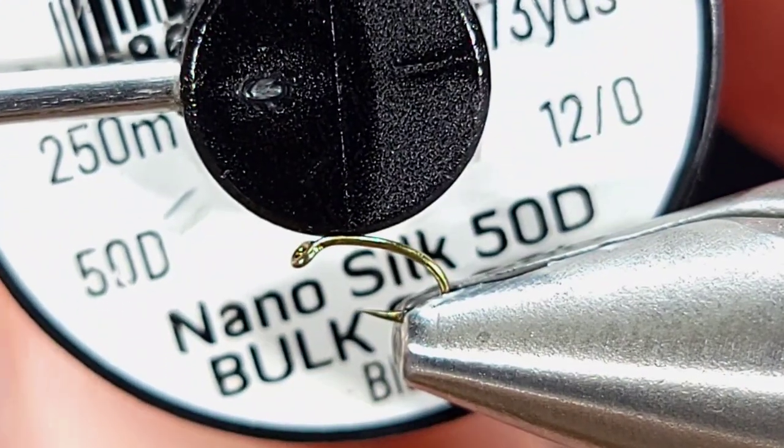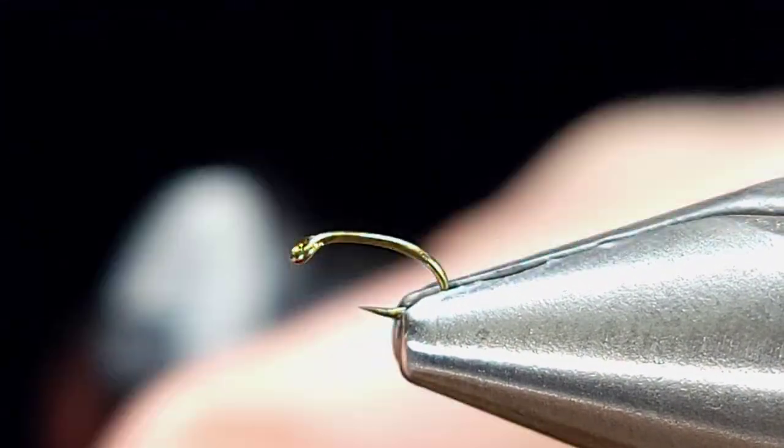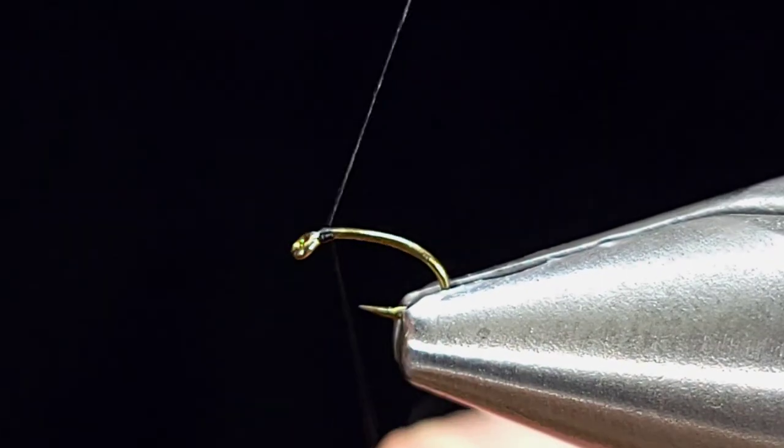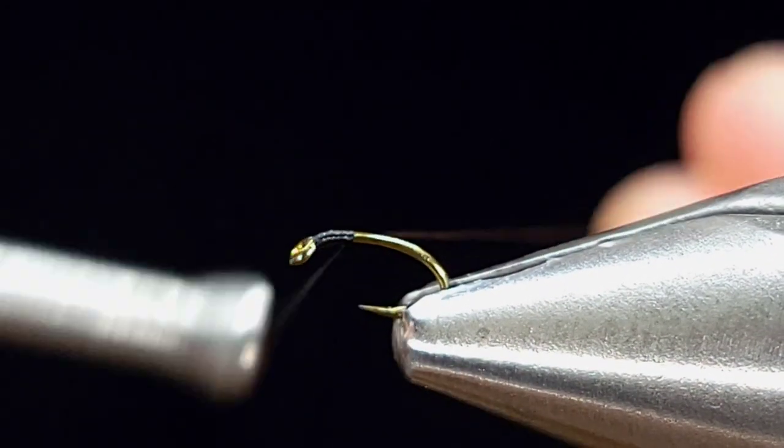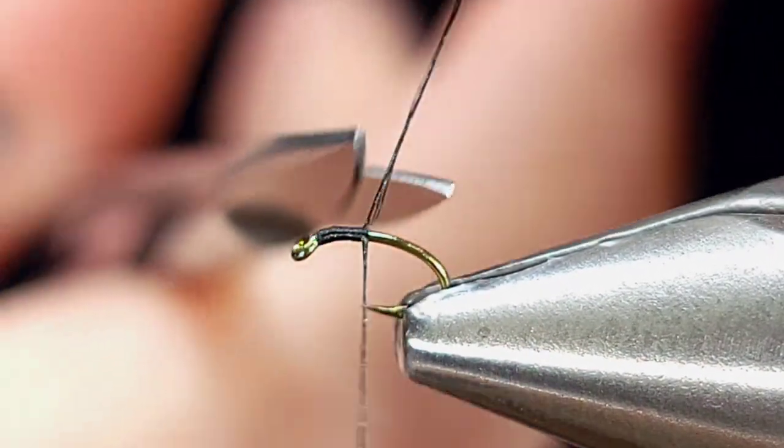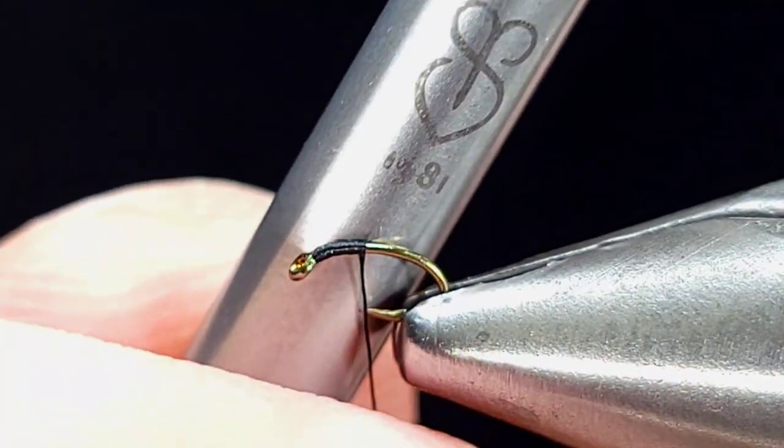For the thread, I'm using Semperfly NanoSilk in 50 denier black, and I'm going to get started with my thread right behind the hook eye. I'm using this NanoSilk specifically to keep the profile or the bulk on this fly as minimal as possible.